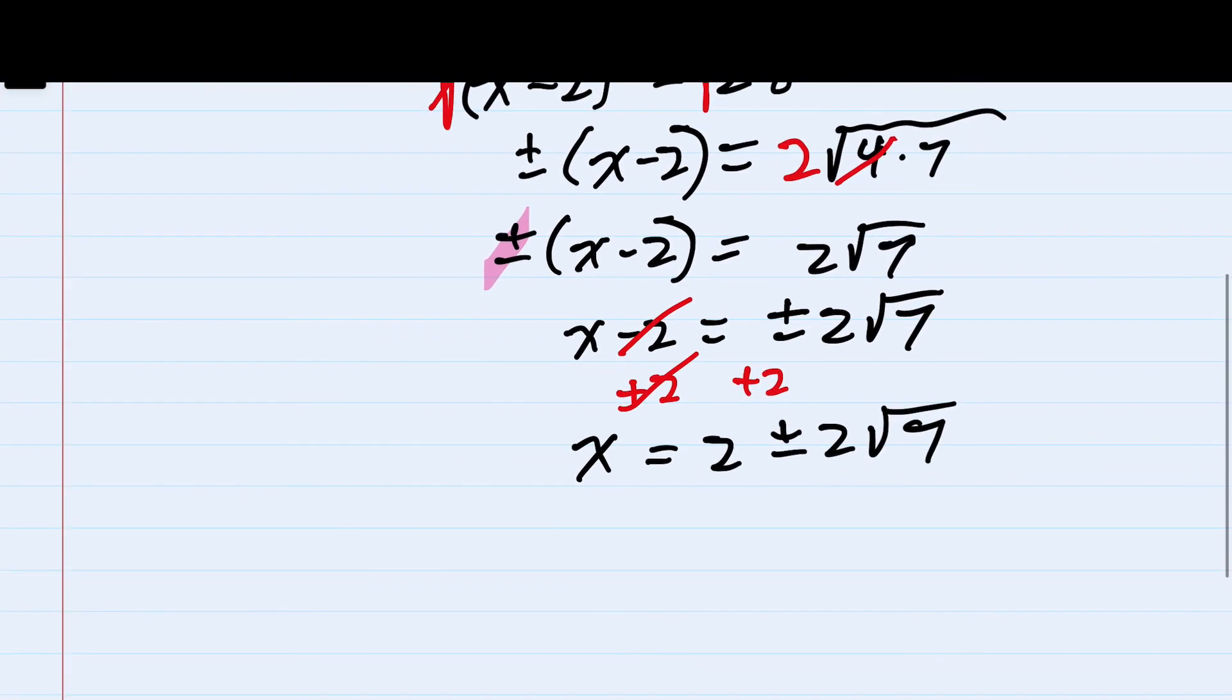And here we can see that we have two solutions. One solution is x equals 2 plus 2 square roots of 7. The other solution is 2 minus 2 square roots of 7.